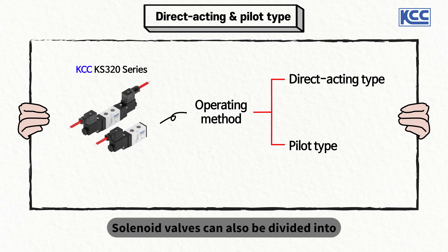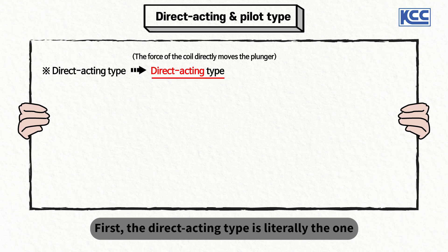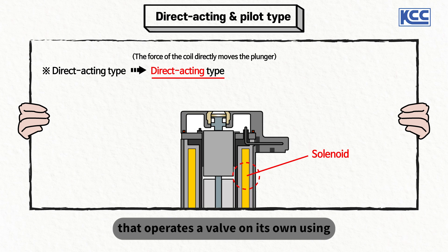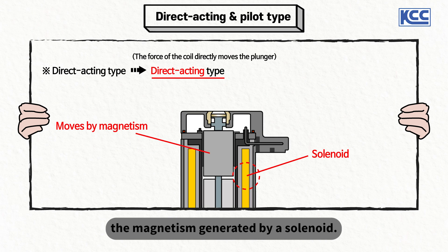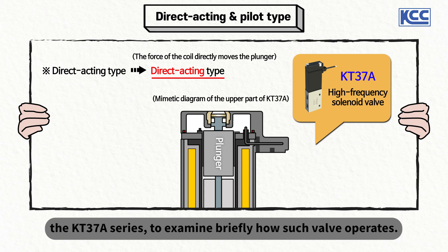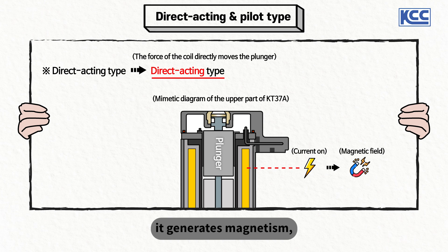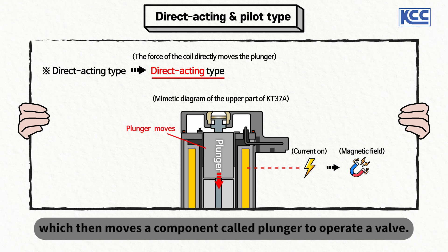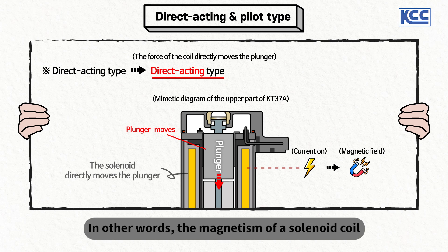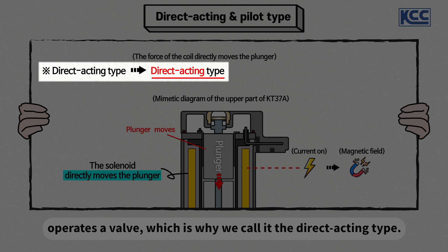Solenoid valves can also be divided into direct acting type or pilot type, depending on how the valves operate. The direct acting type is literally the one that operates a valve on its own using the magnetism generated by a solenoid. Looking at KCC's direct acting valve, the KT37A series: once current is applied to a solenoid coil, it generates magnetism, which then moves a component called a plunger to operate the valve. The magnetism of a solenoid coil directly activates a plunger and subsequently operates the valve, which is why we call it a direct acting type.